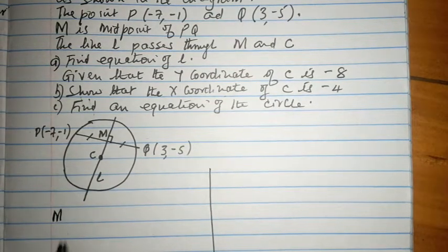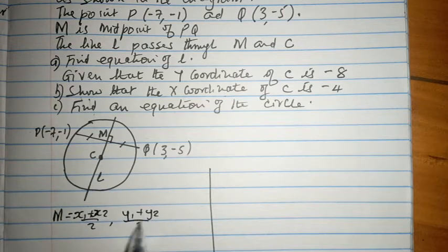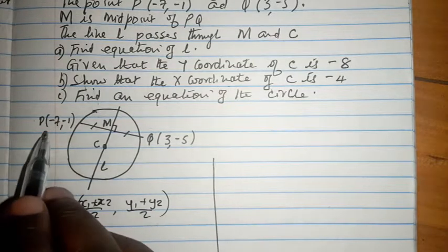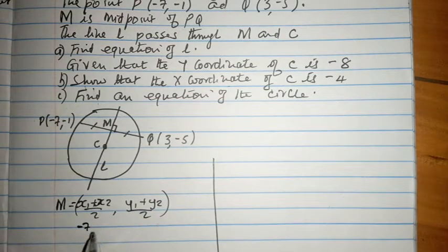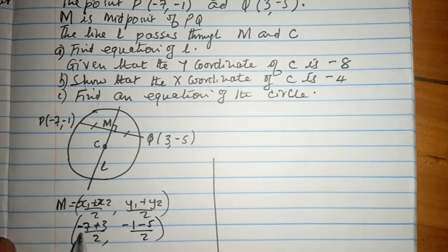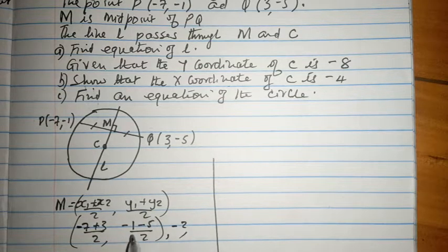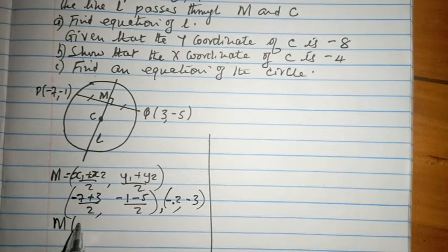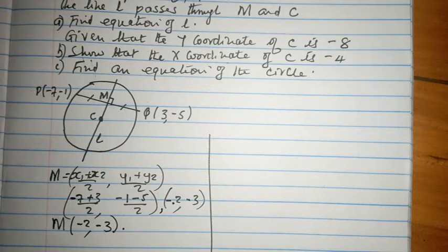Let us first establish the coordinates of midpoint M. The coordinate of M is given by (X1 + X2)/2, (Y1 + Y2)/2. So that is (-7 + 3)/2 and (-1 + (-5))/2, giving us -4/2 = -2 and -6/2 = -3. The coordinates of point M are (-2, -3).